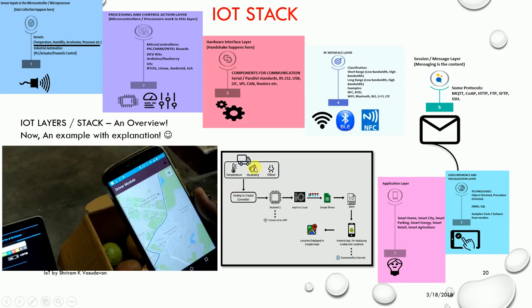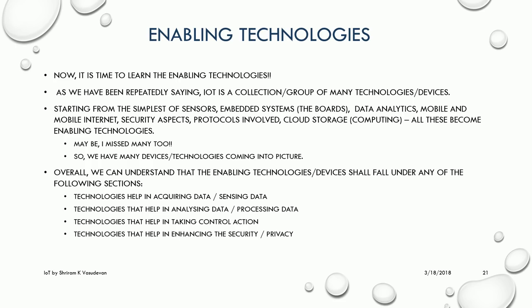In the block diagram you can see I measure temperature, humidity, and odor, put it into the NodeMCU — which is the microcontroller connected to Wi-Fi. The first four steps are covered and the data goes to the cloud where it is analyzed. Then a message goes to the Android app which shows the status, grade, and delivery direction. All these statistics come through the internet — that is why it is called the Internet of Things. Selection of components is the toughest task in IoT.